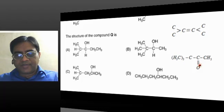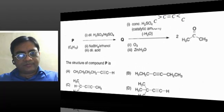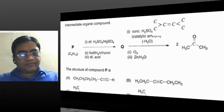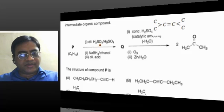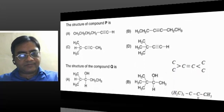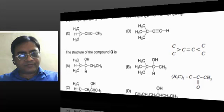Now, this ketone is formed by the hydration of P. P must be an alkyne. Which alkyne on hydration can give us this ketone?